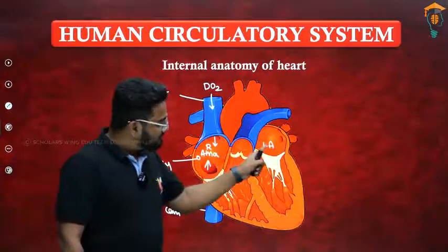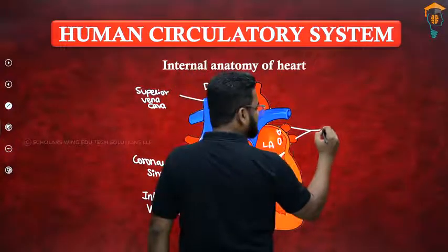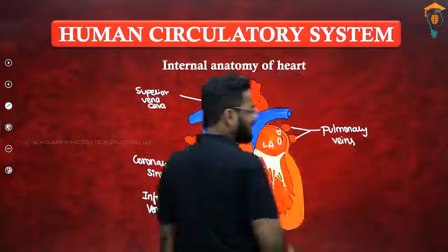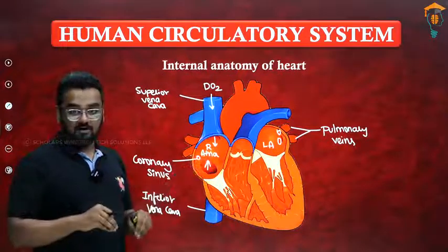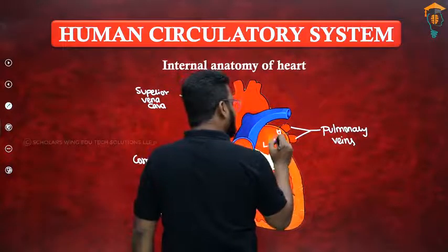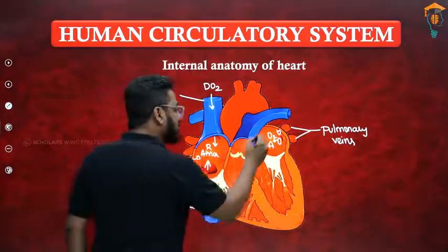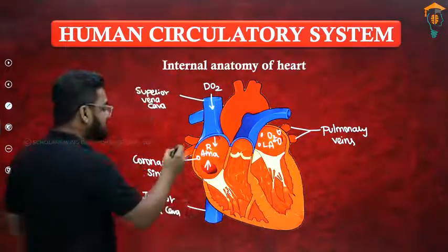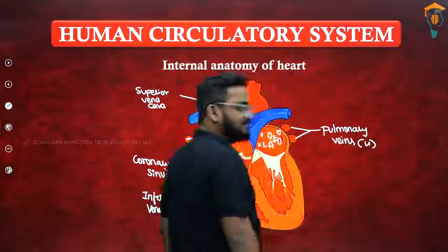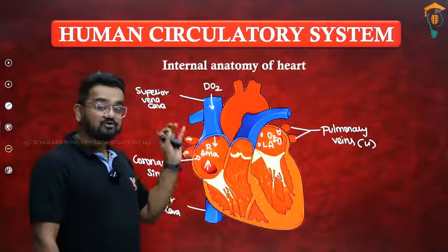Moving on to the left atrium: it has openings from the pulmonary veins. Although most veins carry deoxygenated blood, the pulmonary veins are an exception — they bring oxygenated blood. There are two pairs of pulmonary veins, so there are four pulmonary veins in total. So the right atrium contains deoxygenated blood and the left atrium contains oxygenated blood.